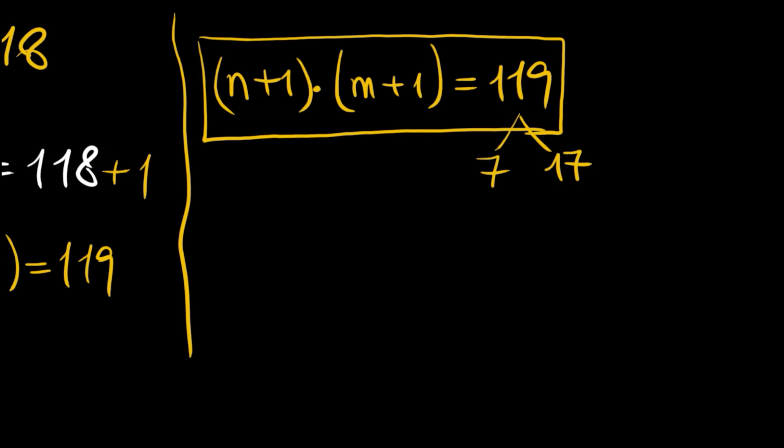The two primes just dividing this number are 7 and 17. Then we have two possibilities.